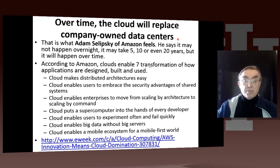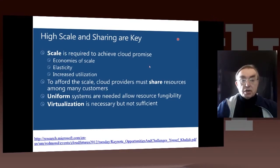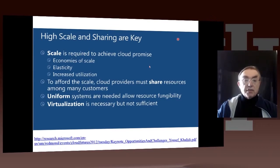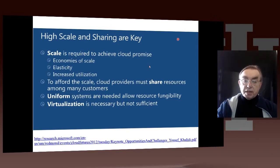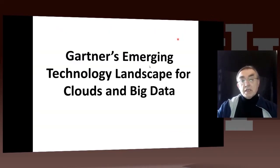Looking at key features of clouds — from a talk by Microsoft Azure architect Kaliti — we need scale; it's necessary to get the economies, the elasticity, and the natural sharing among lots of people. This is only possible if your systems are large; if they're small, none of this works. You have to share resources among a lot of customers to be able to afford it. You need virtualization for uniformity, and you need fungibility — the ability to take a resource working for customer A and make it work for customer B. Virtualization is necessary but not sufficient, because you also have to address other problems like fault tolerance. And that's the end of this lesson on what is a cloud.